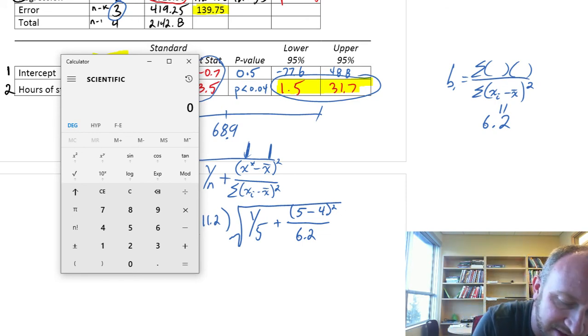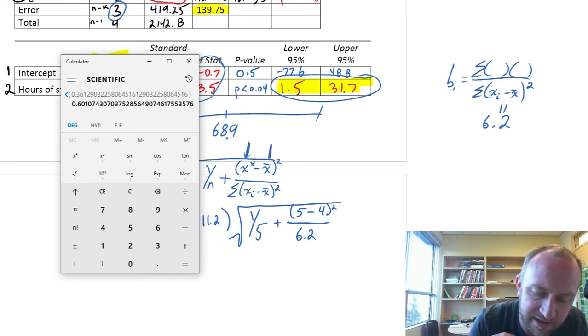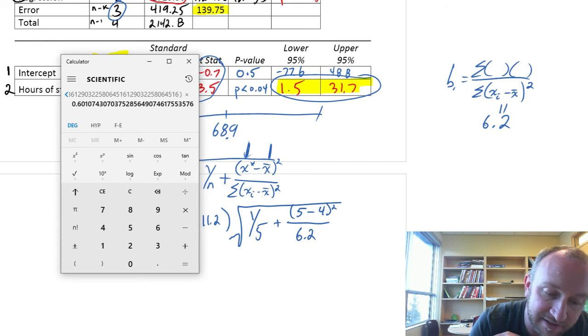So, this is going to be just 1 divided by 6.2, plus 1 divided by 5, and we'll take the square root of that,